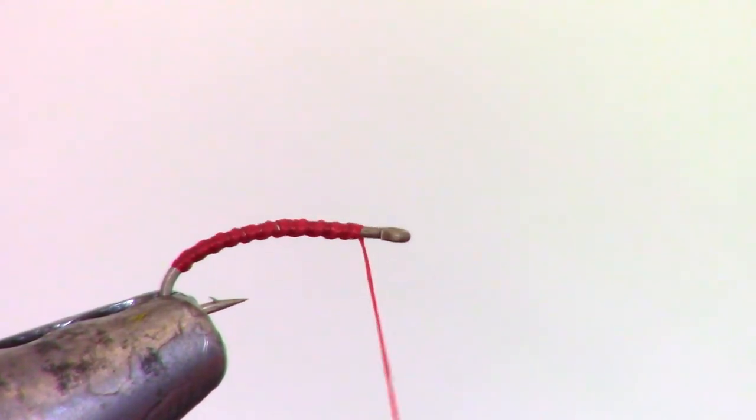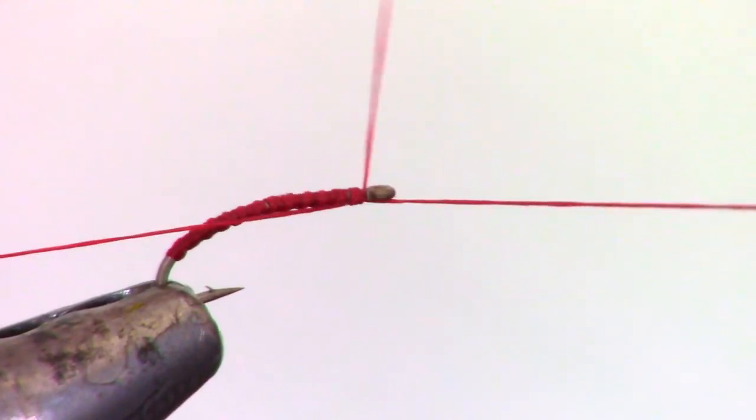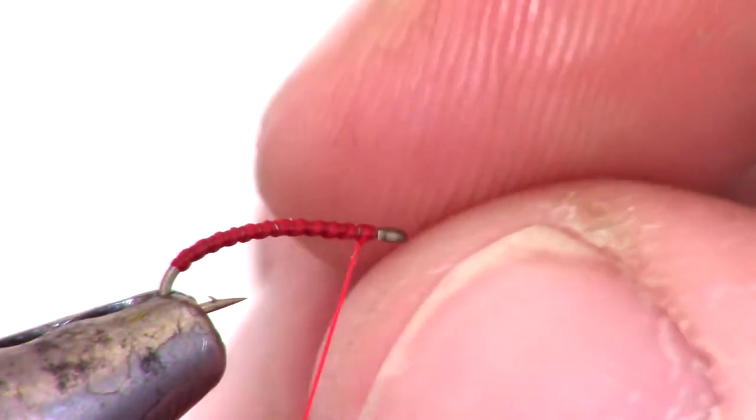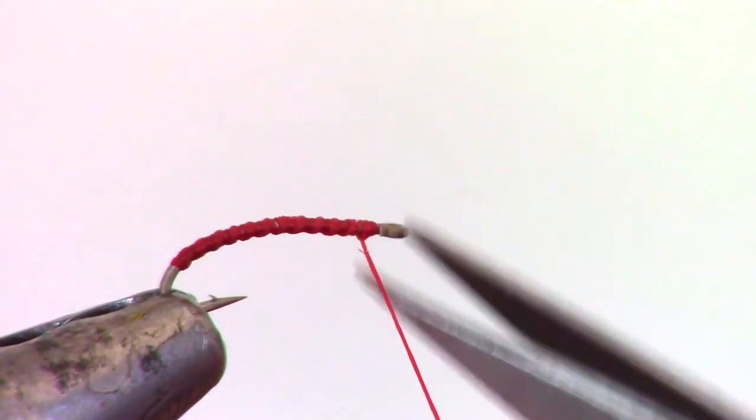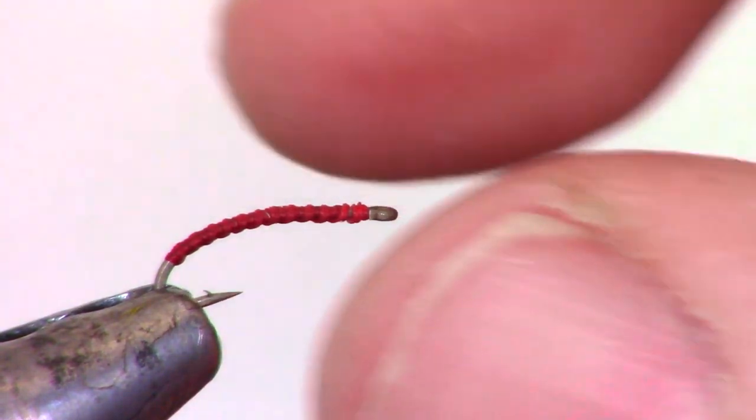Now whip finish your fly. Make sure you don't build too high on your whip finish. Usually just 3-4 wraps will do it. And make sure also that your whip finish wrap sits smooth and doesn't form a bulge. You can either snip off the tag end of the thread, or you can snap it off by pulling it quickly.